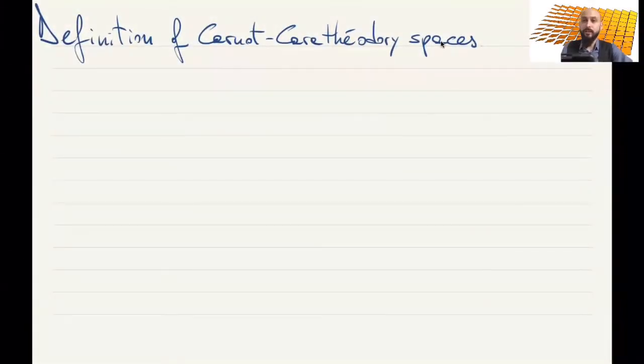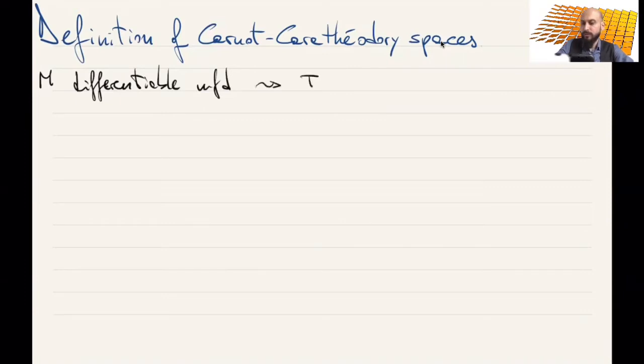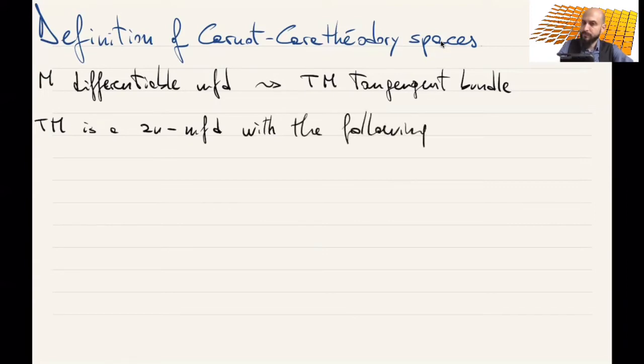In the construction of a Carnot-Carathéodory space, we start with M to be a differentiable manifold. For this we consider TM to be the tangent bundle. Remember that TM is a 2n-dimensional manifold with the following local parametrization.